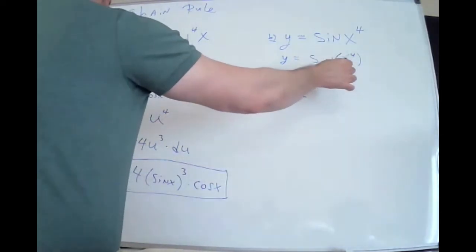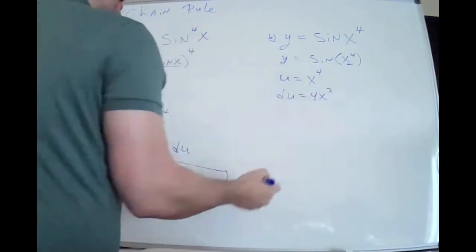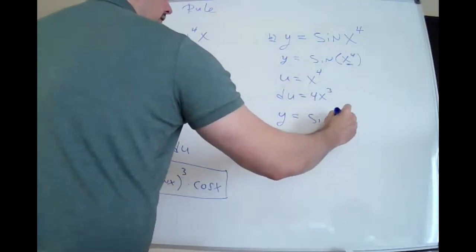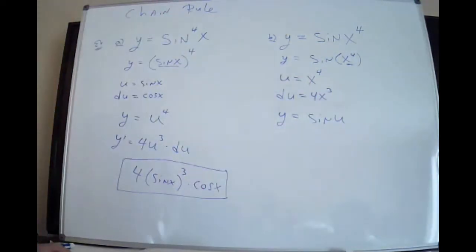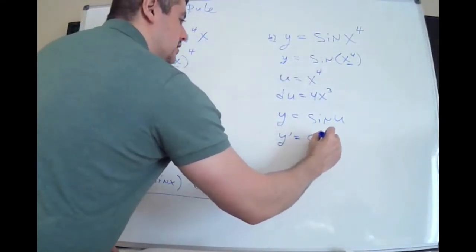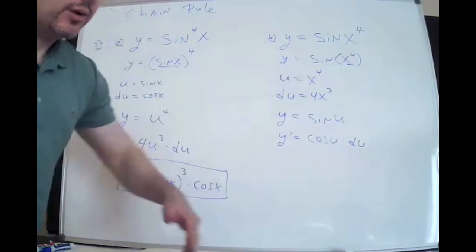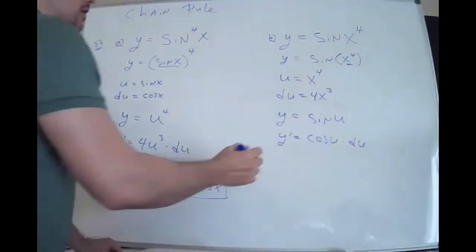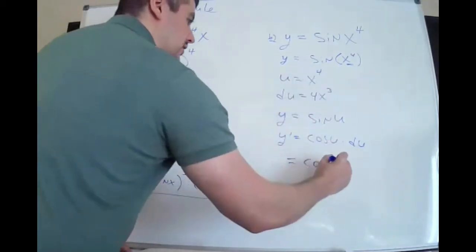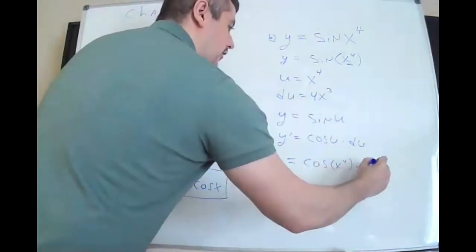For sine(x⁴), the outside function f is sine, so u must be x⁴. This gives me sine(u). Now take the derivative of u: du = 4x³. Replace x⁴ with u — that's the whole point of u-substitution. The derivative of sine(u) is cosine(u) times du. So now just plug everybody back in: cosine(x⁴) times 4x³.